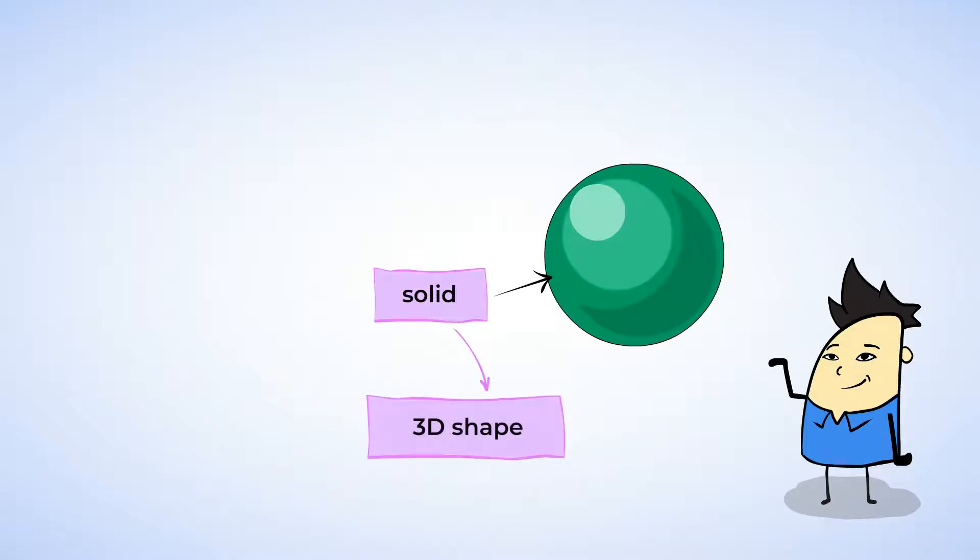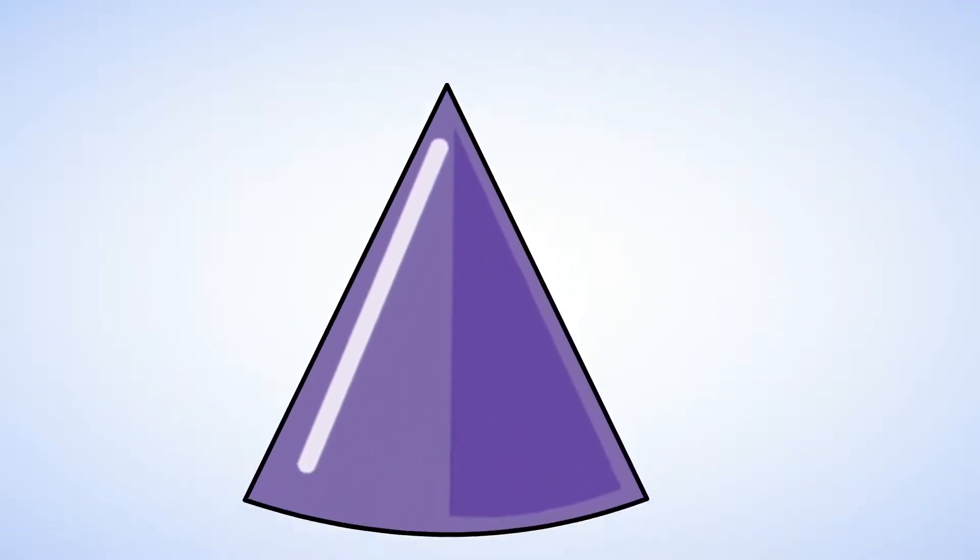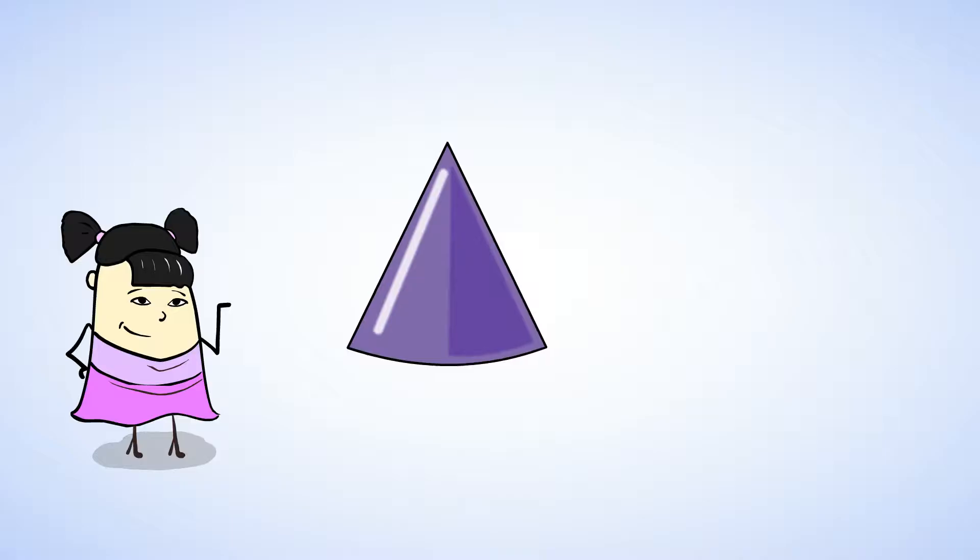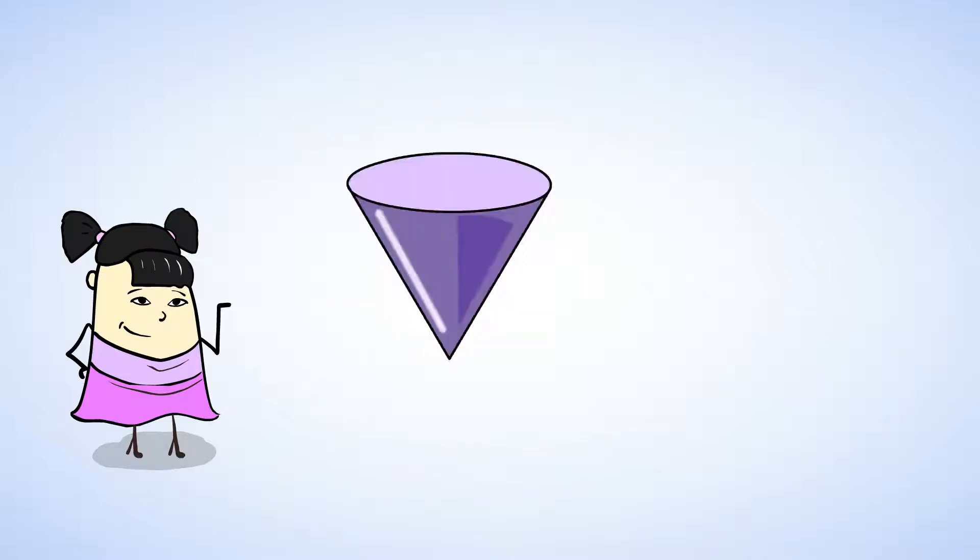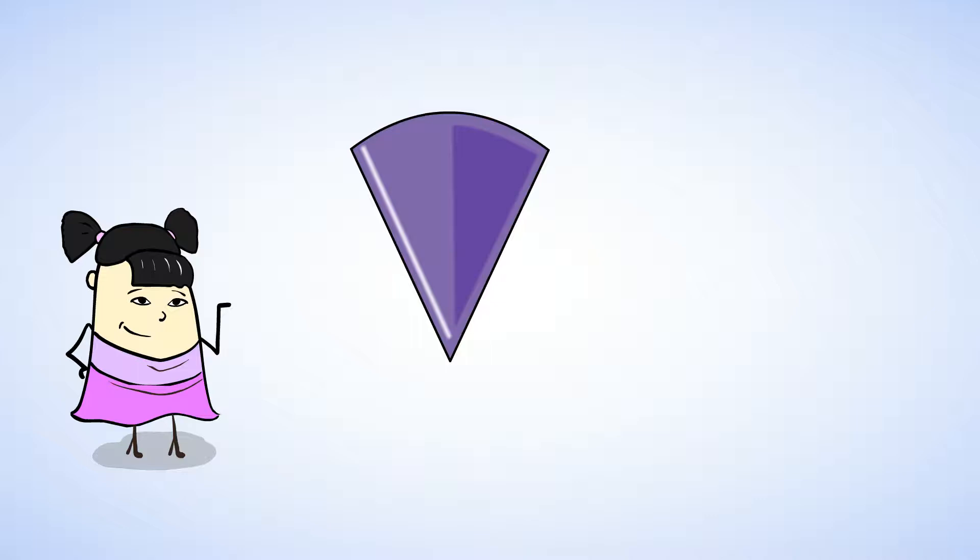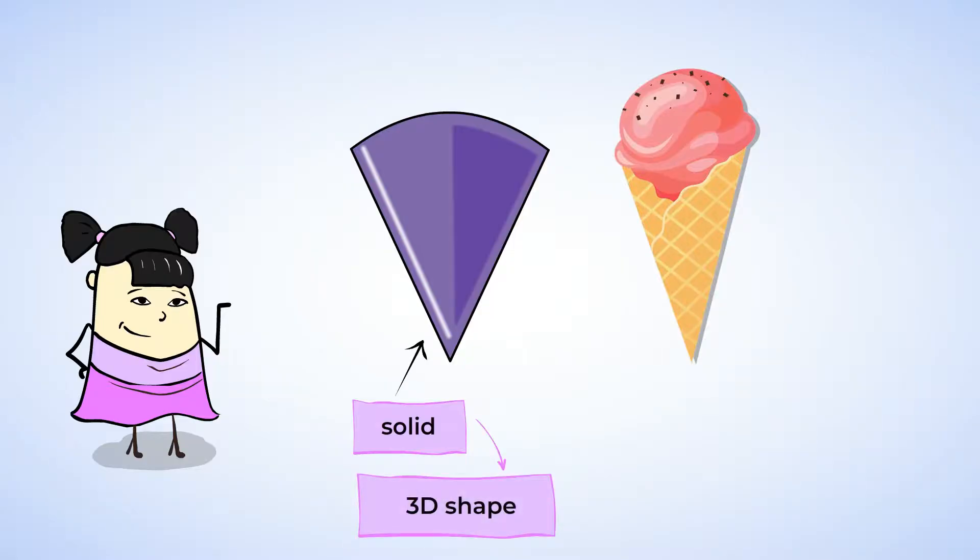And next, let's take a look at this shape. Oh, this part is curved. But then over here, it's kind of rounded. And what if we turn it? Well, we can see different parts of the shape now. And it looks like an ice cream cone. This shape is solid. It's a 3D shape. Cool.